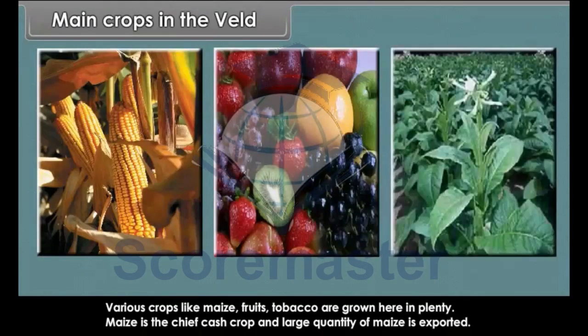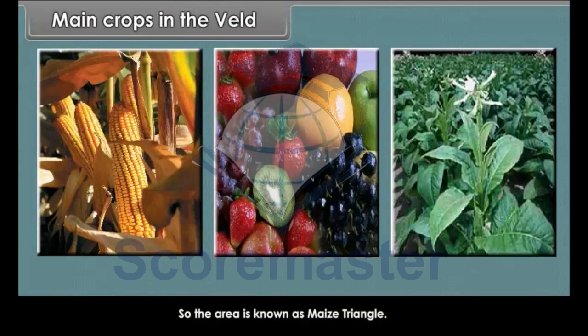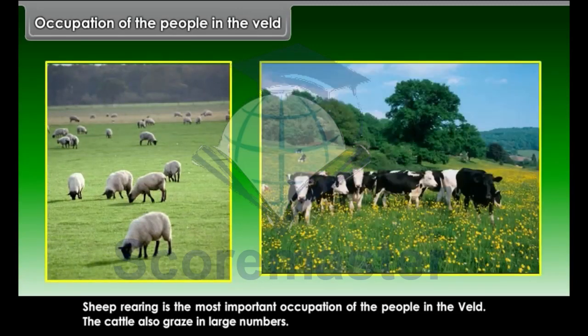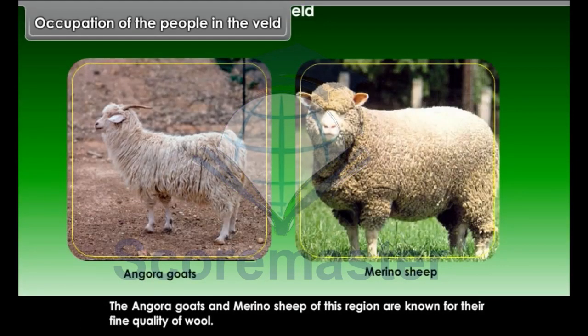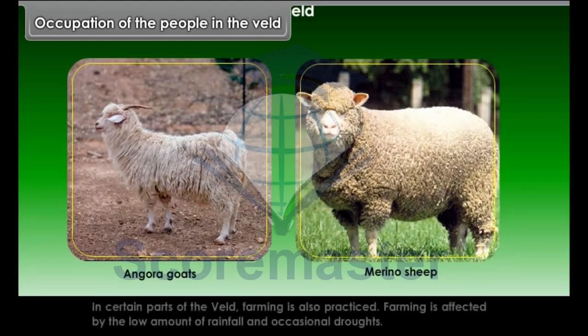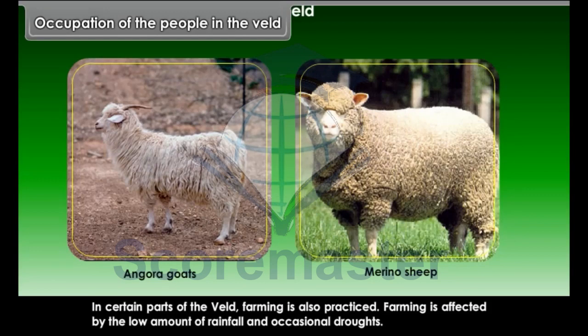Various crops like maize, fruits, and tobacco are grown in the Veld in plenty. Maize is the chief cash crop and a large quantity is exported, so the area is known as the maize triangle. Sheep rearing is the most important occupation of the people in the Veld. The cattle also graze in large numbers. The Angora goats and Merino sheep of this region are known for their fine quality wool. The cattlemen supply most of the local needs of milk, mutton and wool. In certain parts, farming is also practiced, though it is affected by low rainfall and occasional droughts.